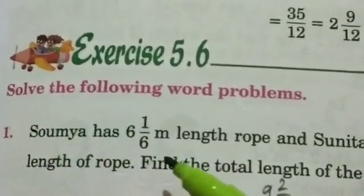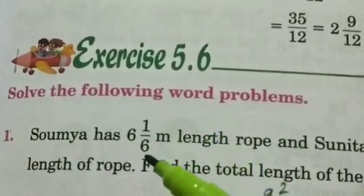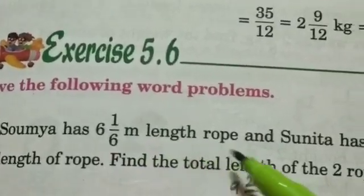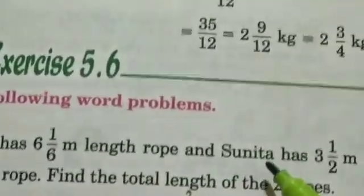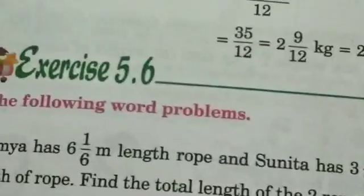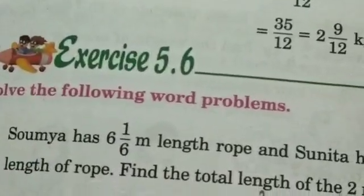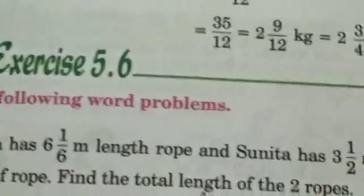Soumya has 6 1/6 meter length rope and Sunita has 3 and a half meter length of rope. Find the total length of the two ropes.